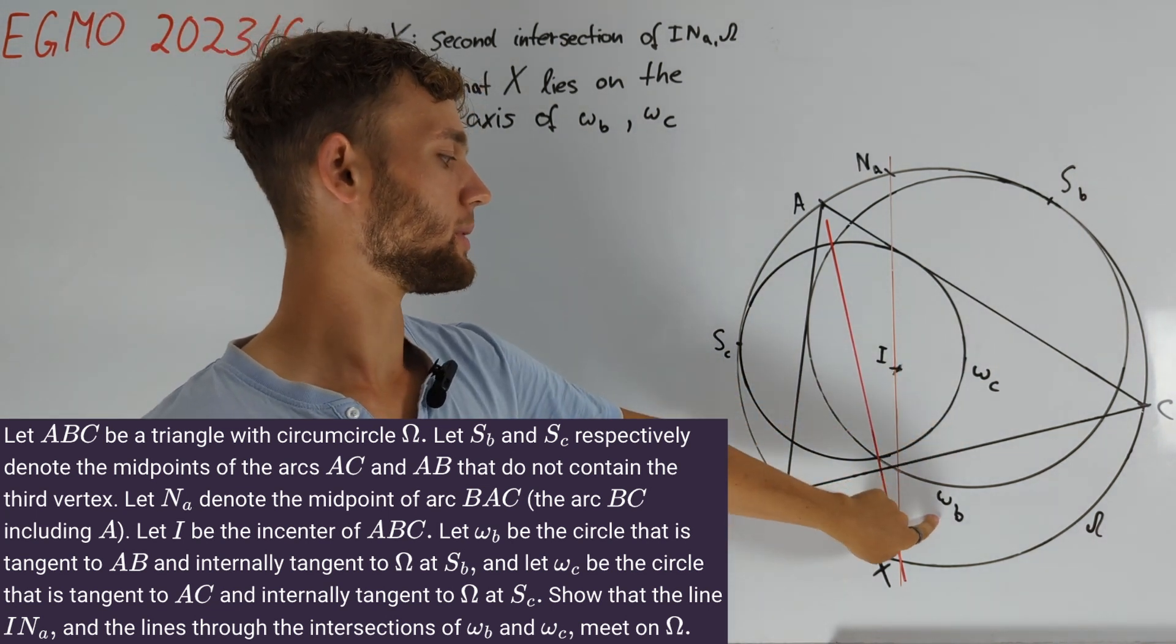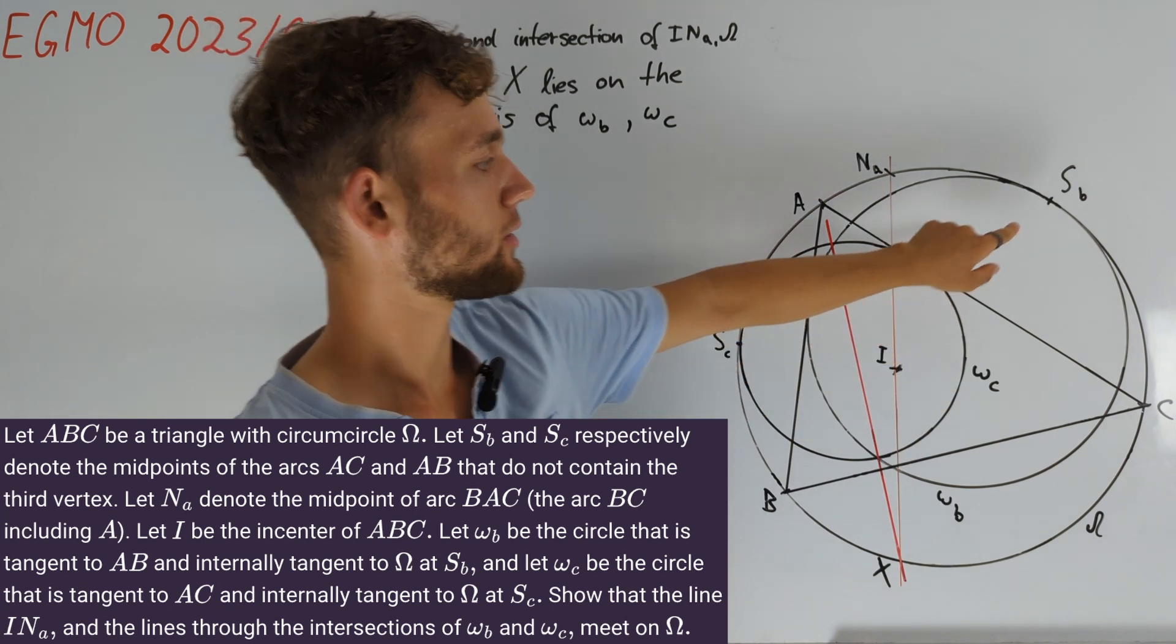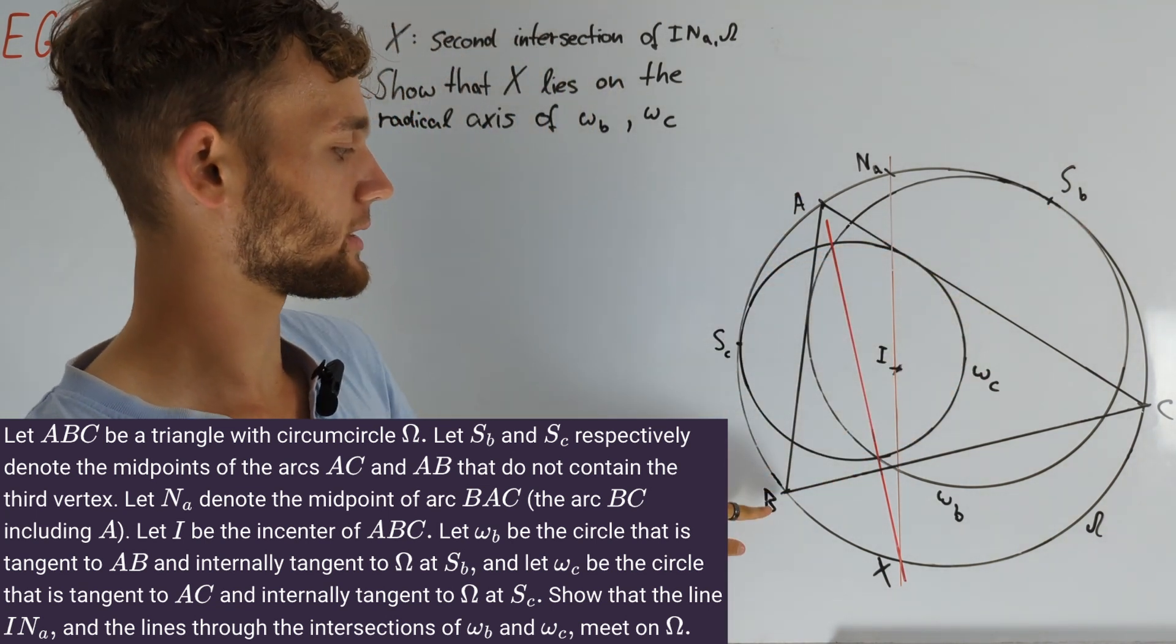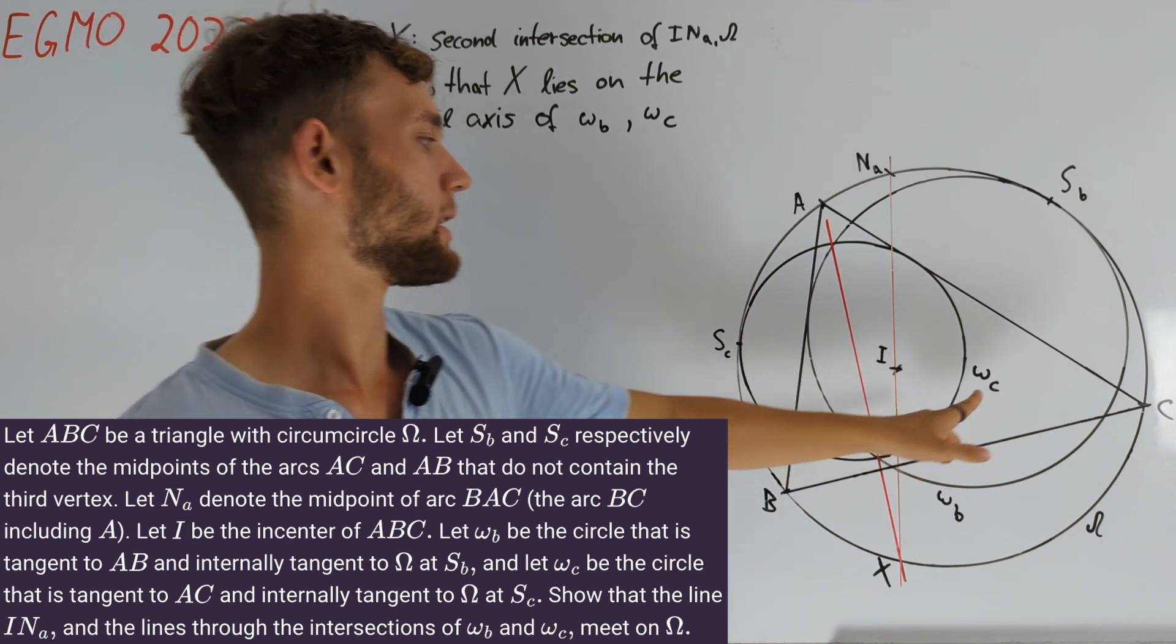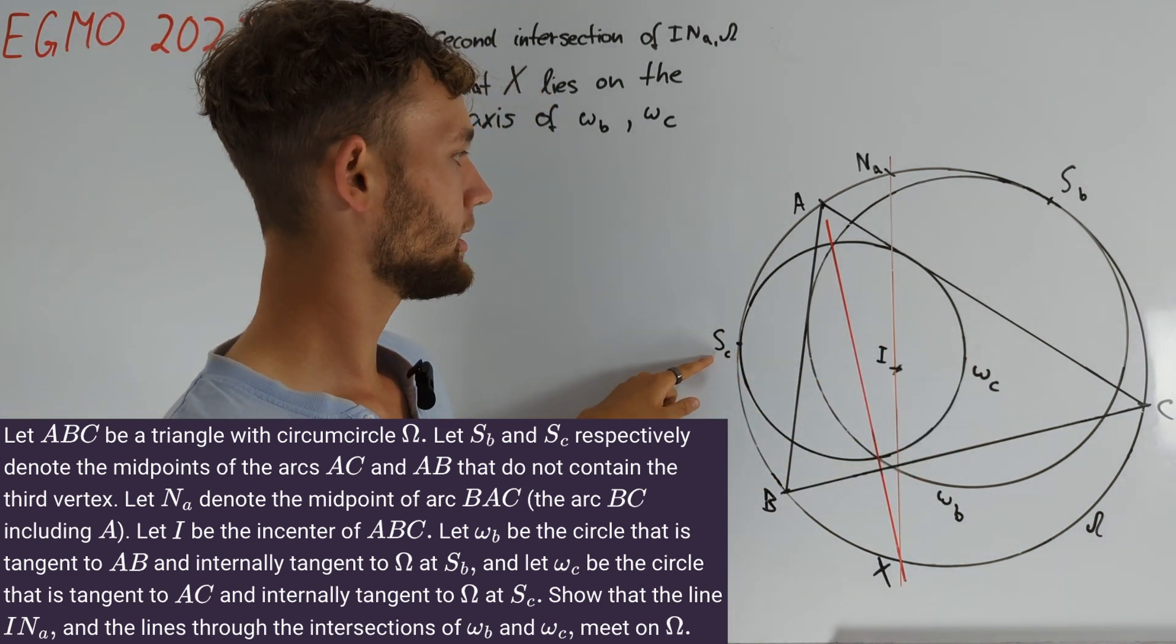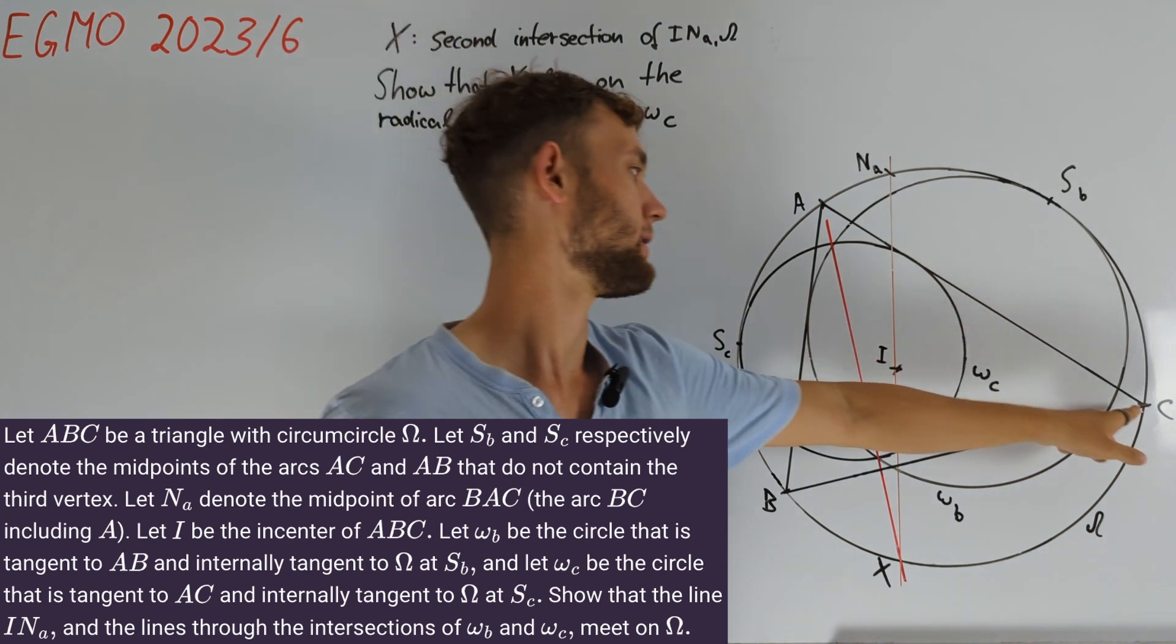Now we define a circle omega_B that is internally tangent to omega at SB and tangent to the triangle side AB. Similarly, omega_C is internally tangent to omega at SC and tangent to AC.